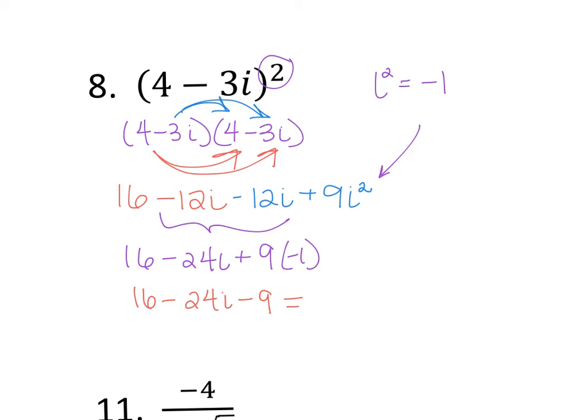And then I have 16 minus 9. Well, I can simplify those to 16 minus 9 equals negative 24i plus, oh, here's my i, plus 7. If you wanted to write it 7 minus 24i, that is okay too. They are the same thing. But that is your answer. So, you should have gotten one or the other.